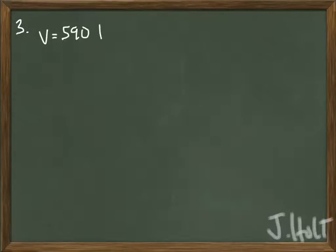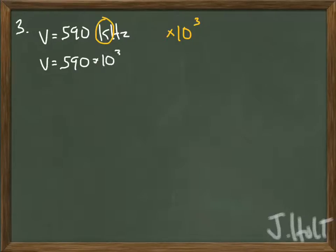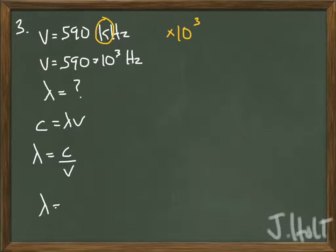In number 3, we're given the frequency. That's the letter ν. It's given to us in kilohertz, so you have to think about what kilo means. Kilo means times 10 to the third, so we can rewrite it as 590 times 10 to the third hertz. Let's think about which equation we can use. We want to find the wavelength. We know that c equals wavelength times frequency, so we can divide both sides by frequency to get this equation.